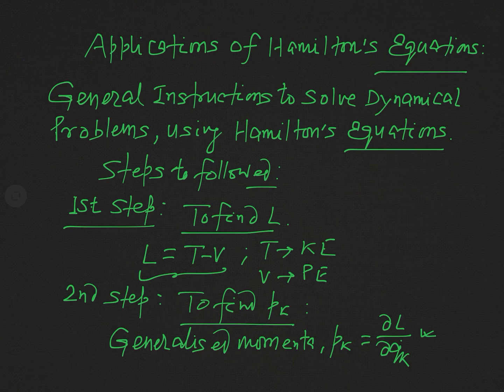In the first step, we find the Lagrangian of our system, L. As you know, L is defined as T minus V, where T represents the kinetic energy of the system and V represents its potential energy. So to find the Lagrangian L, we must first calculate the kinetic energy and potential energy of the system.